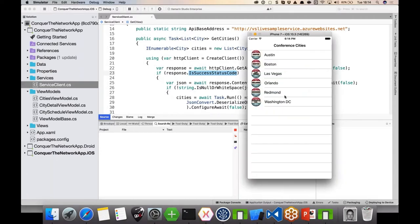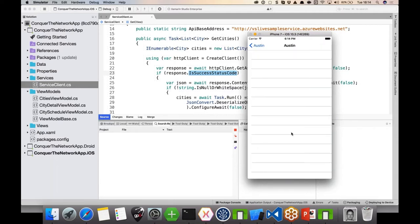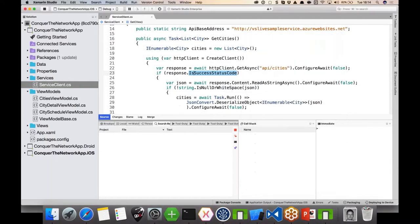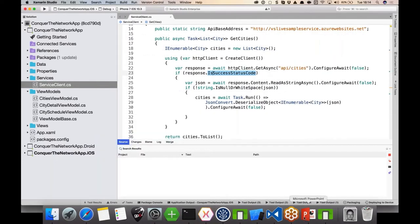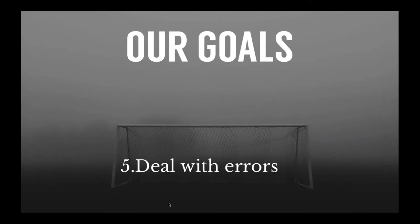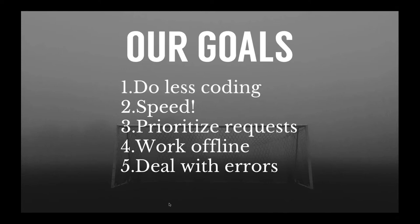The working application shows a list of cities, I can click through and submit a rating for a particular conference, and I can retrieve my schedule. The goals for this application are: first, we want to be able to deal with errors; second, we want to be able to work offline; third, we want to prioritize our requests; fourth, we want a very fast application; and first of all, we want to do less coding because we're lazy.